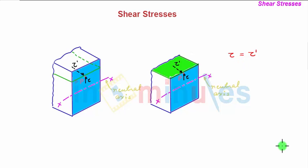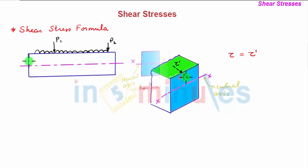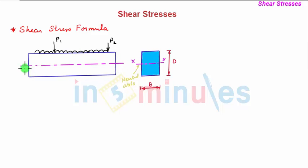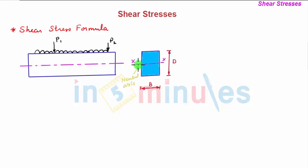Just as we derived a bending formula or flexural formula, let us now derive the formula to determine the magnitude of shear stress. Consider a horizontal beam subjected to vertical loadings of different kinds as shown in the figure. The cross-section of the beam has width b and depth d, and the centroidal xx axis of the cross-section is also its neutral axis.